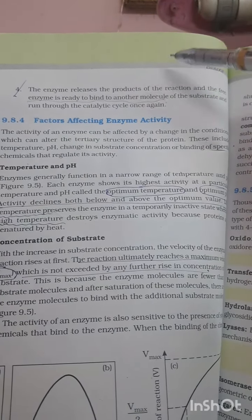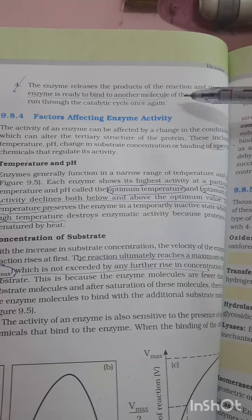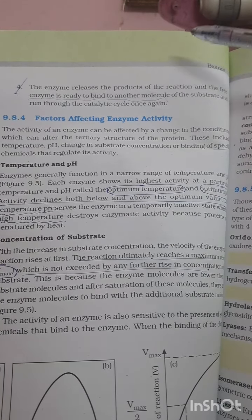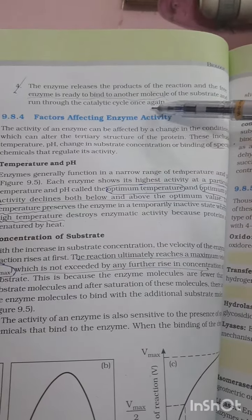So one enzyme can accommodate many molecules one after another. So you should not get confused when it asks one enzyme one product or one enzyme many substrates can attach. So a substrate can run through the catalytic cycle again.